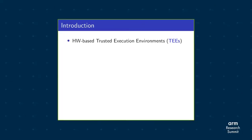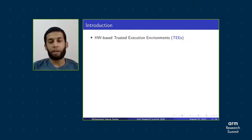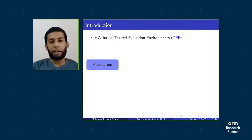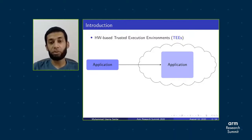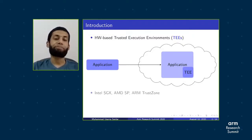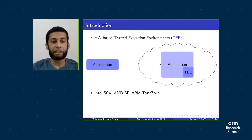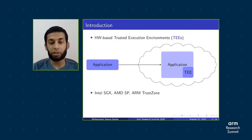There are various ways for the protection of data in use. Hardware-based trusted execution environments are the most prominent ones, where hardware-based techniques are used to isolate data from untrusted parties such as the operating system and other low-level software. This is of great importance when running an application in an untrusted platform such as a public cloud. Various TEEs have been proposed, such as Intel SGX, AMD Secure Processor, and ARM TrustZone. Intel SGX is one of the most widely used, and that is why we focus our work on Intel SGX.